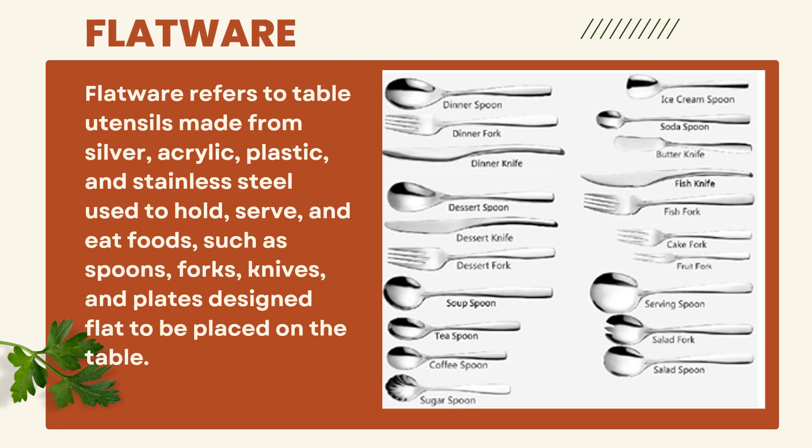Flatware refers to table utensils made from silver, acrylic, plastic, and stainless steel, used to hold, serve, and eat foods — such as spoons, forks, knives, and plates — designed flat to be placed on the table.